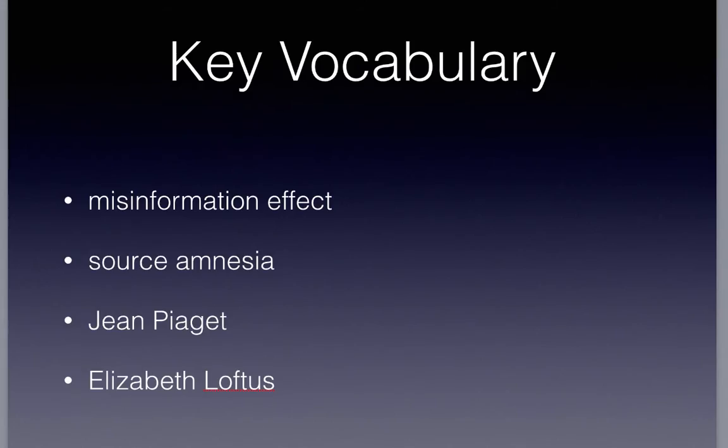There are not too many key terms in this unit. The first that we'll be talking about — which covers most of this entire nine pages that you'll be reading — is about misinformation and how our memories are constructed or can be reconstructed in the wrong way. The misinformation effect is when you take misleading information and incorporate it into your own memory.